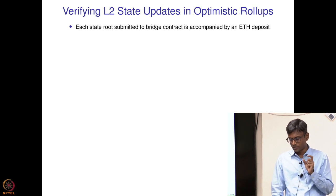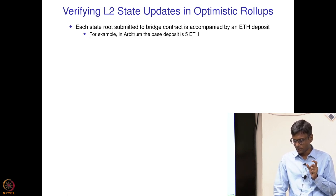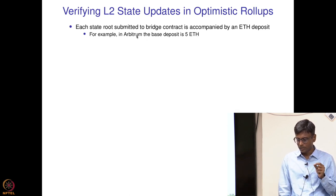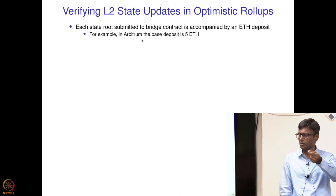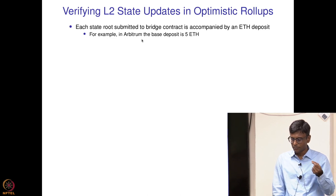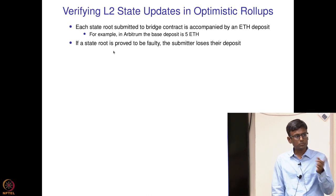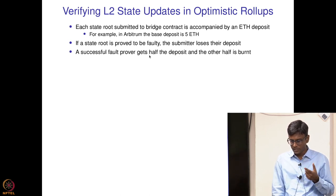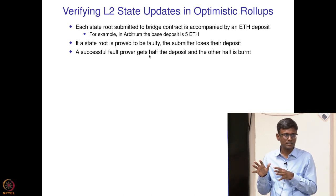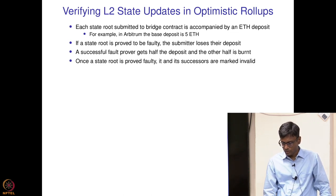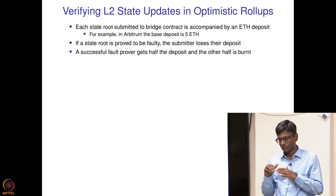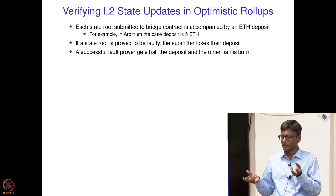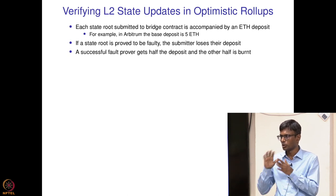Each state root is accompanied by an ETH deposit, also called a bond or a stake. For example, in Arbitrum, if you want to submit a new state root, you have to accompany it with a 5 ETH deposit, which corresponds to around 6000 dollars. If the state root is proved to be faulty, the submitter will lose their deposit. Half of the deposit is burnt and the other half is given to the fault prover, so that the submitter cannot prove their own fault and get back their whole deposit.